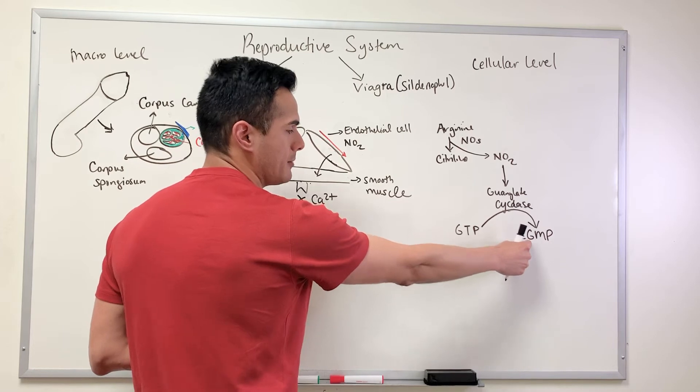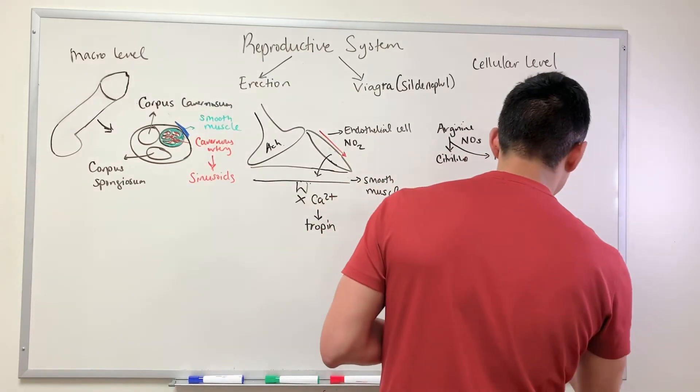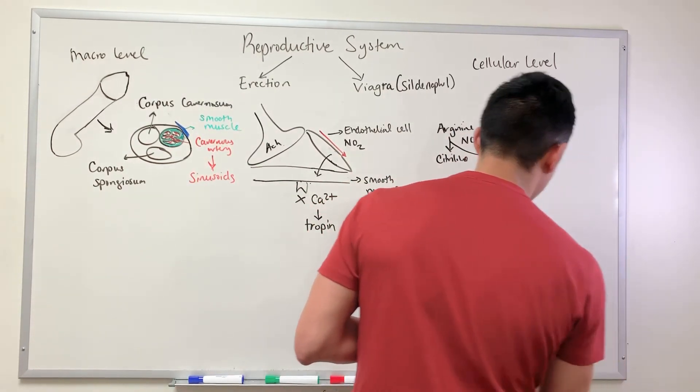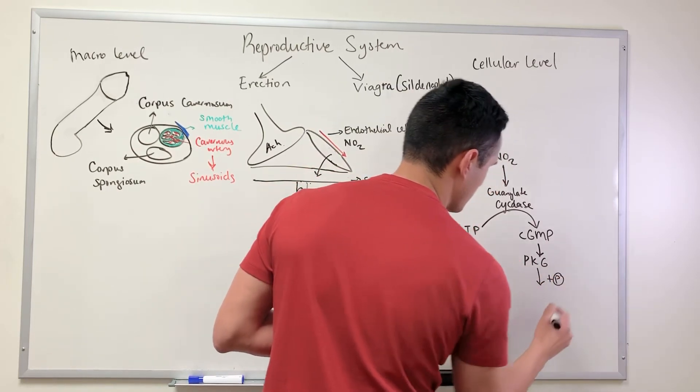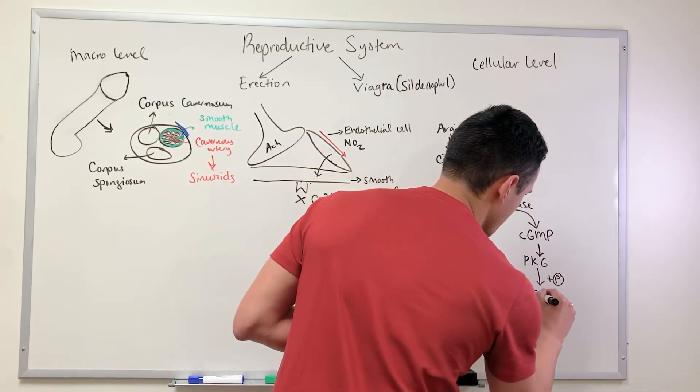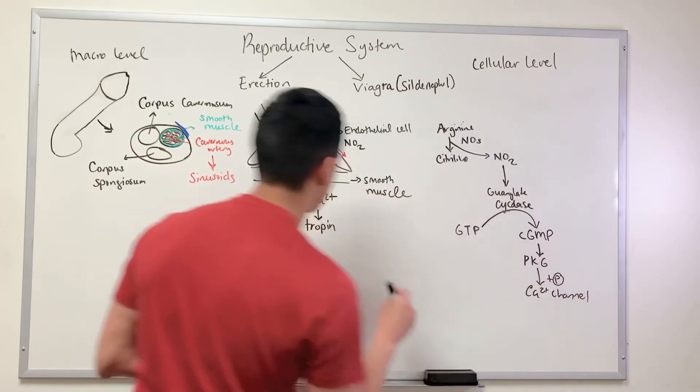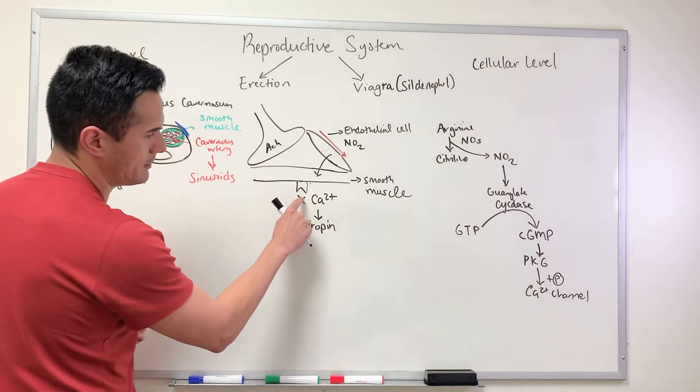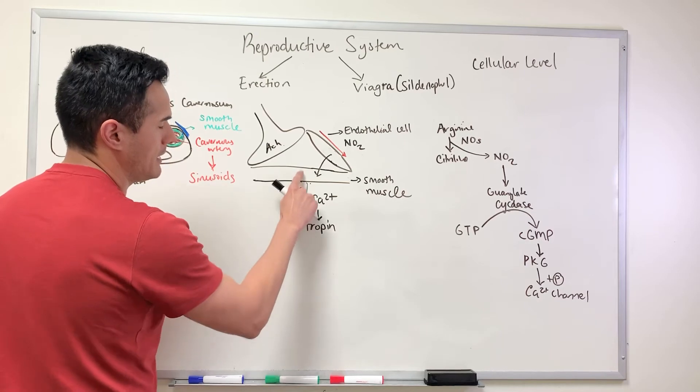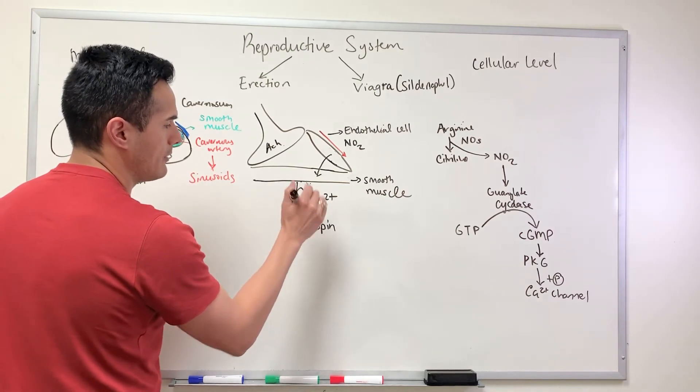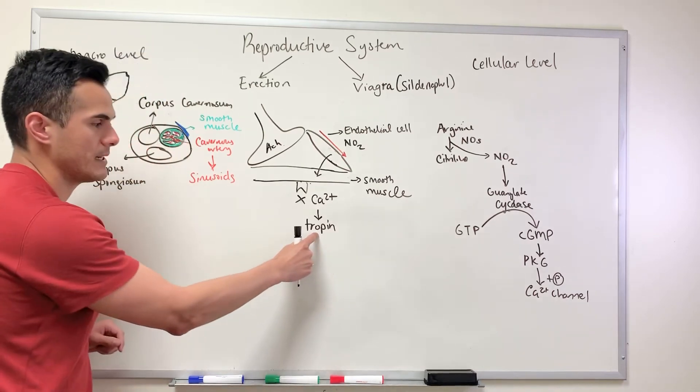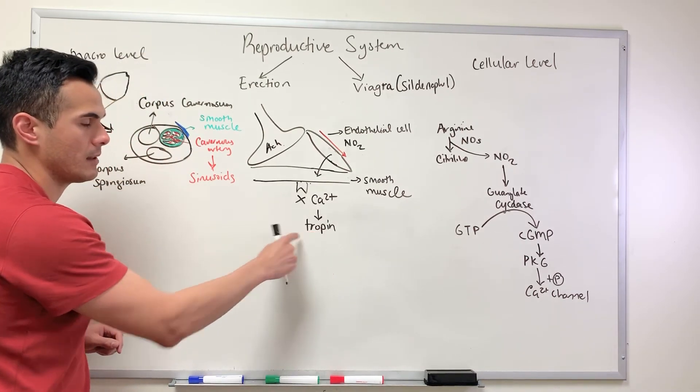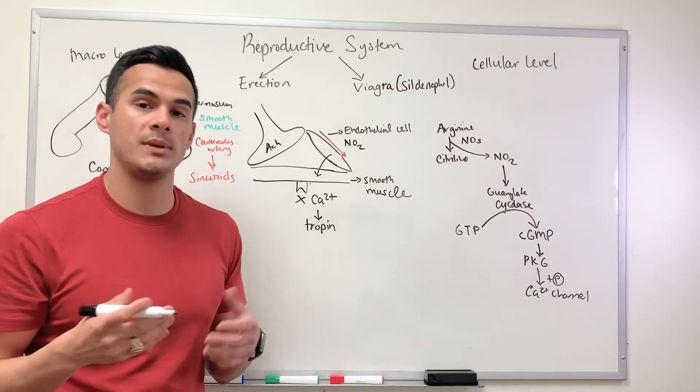Once we activate cyclic GMP, from there we activate protein kinase G. Protein kinase G adds a phosphate group to the calcium channel. As a result, we're inhibiting the release of calcium into the muscle cell. If we inhibit the release of calcium, the cross bridge cycle is not going to happen, therefore the muscle will be in the relaxed state.